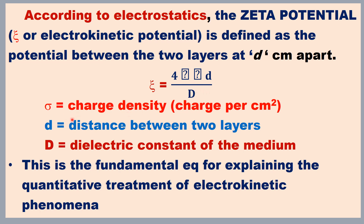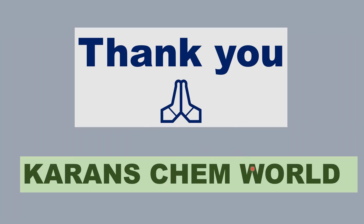According to electrostatics, the zeta potential is the potential developed between the two oppositely charged layers, represented by the letter zeta: ζ = 4πσd / D. Here sigma (σ) is the charge density — charge per square centimeter — d is the distance between the two layers of the order of molecular diameter, and D is the dielectric constant of the medium. On substituting these values the zeta potential can be determined, providing the fundamental equation for the quantitative treatment of electrokinetic phenomena such as electro-osmosis, electrophoresis, sedimentation potential, and streaming potential.